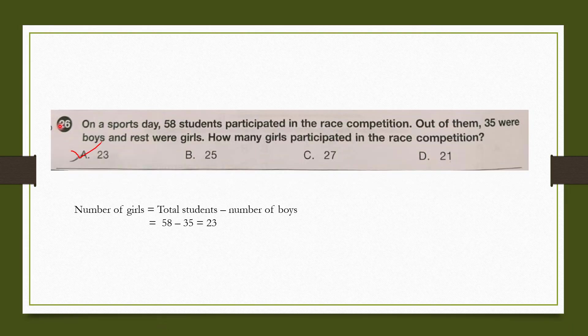Question number 26: On a sports day, 58 students participated in the race competition. Out of them, 35 were boys and the rest were girls. How many girls participated? Total students is 58 and 35 are boys. Girls will be 58 minus 35 which is 23. The number of girls who participated is 23, which is option A.